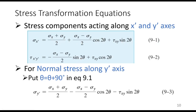Equation 9.1, which was derived in the previous lecture, gives sigma_x'. Today we have derived tau_x'y', which equals minus (sigma_x minus sigma_y)/2 times sin 2theta plus tau_xy times cos 2theta.